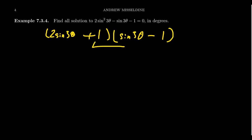Notice, of course, 1 times negative 1 is negative 1. And we get 2 sine times negative 1, that gives us a negative 2 sine. And then we have a plus 1 sine that adds together to give us a negative 1. So that is the correct factorization. This is equal to 0. So then by the zero product property, we can set each factor equal to 0 and solve it from there.